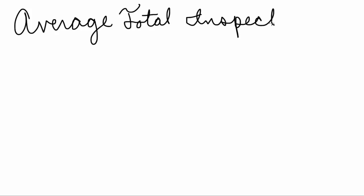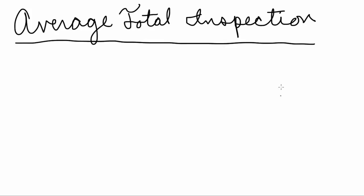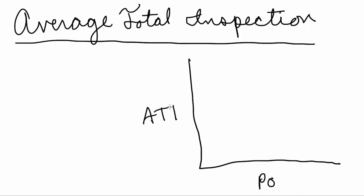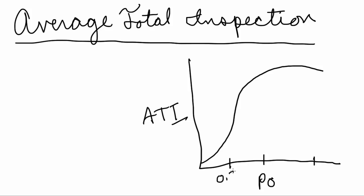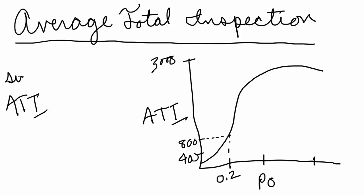The last way to evaluate sampling plans is the average total inspection, or ATI. The ATI is the amount inspected by both the consumer and the producer. This is similar to the ASN curve because it provides information about the amount inspected, but not necessarily about the effectiveness of the sampling plan. Nonetheless, it gives us an indication of the total inspections required for different percent non-conforming levels. There are different formulas to determine the ATI for different types of sampling plans, and here's the formula for a single acceptance sampling plan ATI.